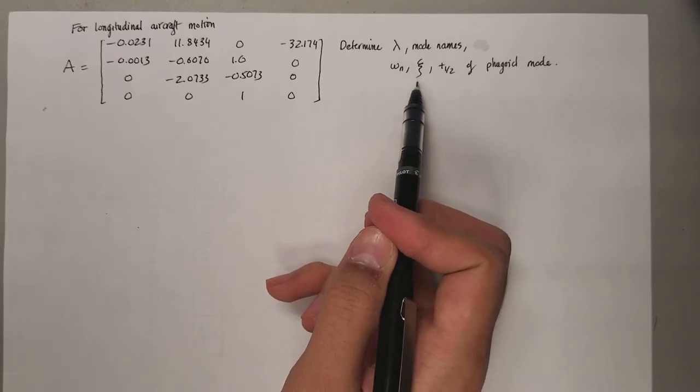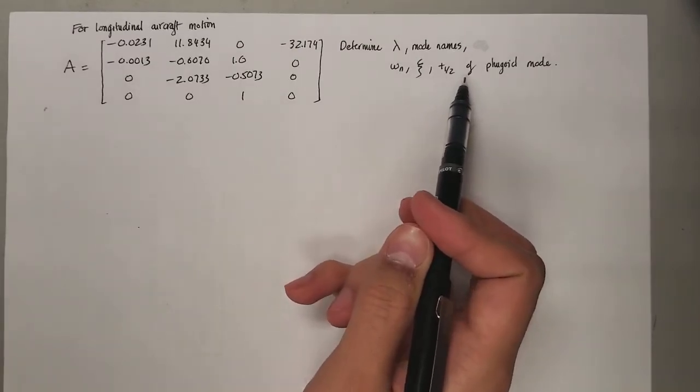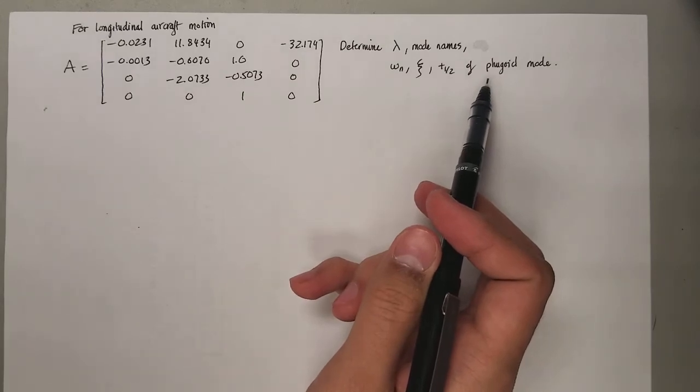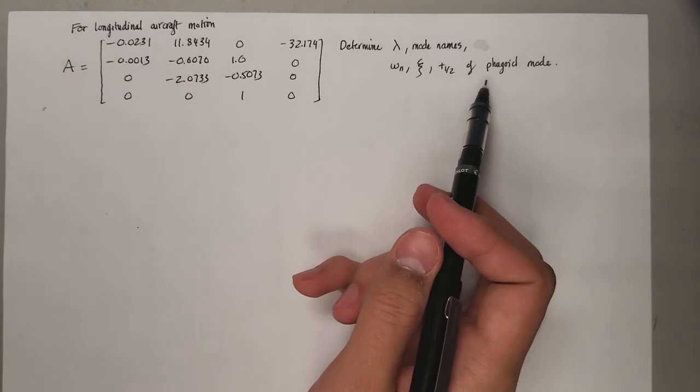Then you're also asked to determine the natural frequency, the damping ratio, and the time to half amplitude of phugoid mode, which is the long period.